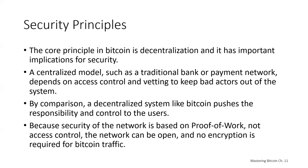The core principle in Bitcoin from a security perspective is decentralization, and this has important implications for computer security. A centralized model such as a traditional bank or payment network depends on access control and vetting to keep bad actors out of the system. By comparison, a decentralized system like Bitcoin pushes the responsibility and control to the users. Because security of the network is based on proof of work, not access control, the network can be open and no encryption is required for Bitcoin traffic.